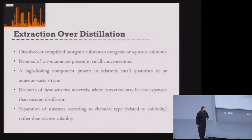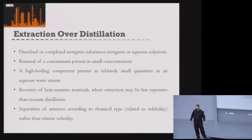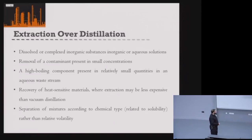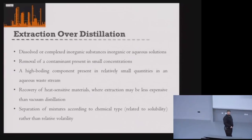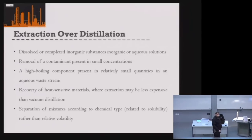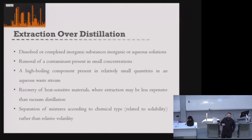Similarly, with removal of contaminants at small concentrations, it's often not economically viable to run distillation. We can use liquid-liquid extraction to remove those contaminants. If we've got a very high boiling component present in aqueous waste streams in small quantities, distillation would be very difficult and expensive because we've got water to boil and a very high boiling point. Potentially, we can use liquid-liquid extraction to remove that high boiling component away from our aqueous phase.